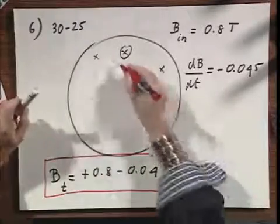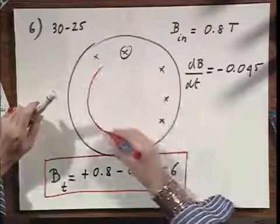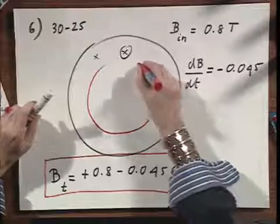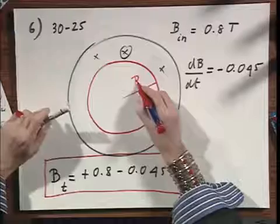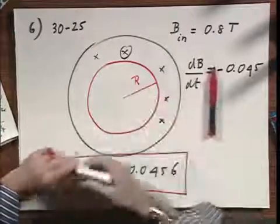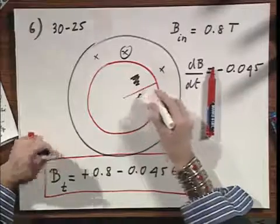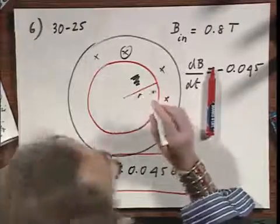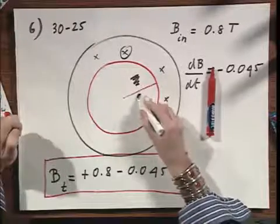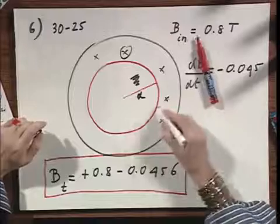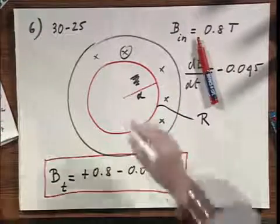Right here we have a concentric wire loop. Let's give it a radius d. And let's give the resistance of this wire a capital R — otherwise we get too much confusion.